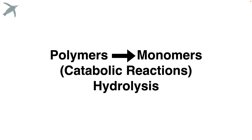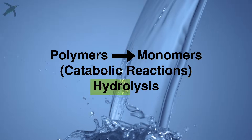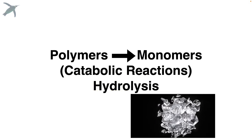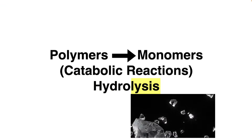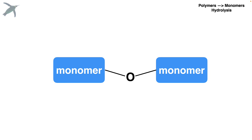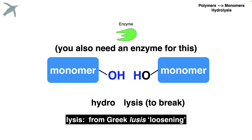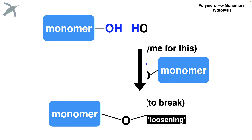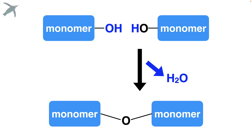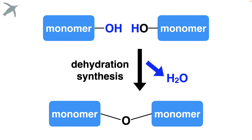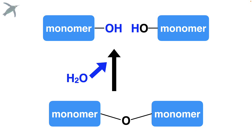Going the other way — polymers to monomers — that happens by hydrolysis. Again, watch the name. You see hydro, that means water, and lysis means to loosen, to break, or to burst. So we're going to add water, and then we're going to lyse the thing — it's going to break. For hydrolysis, you also need an enzyme. So it really is very simple: monomer to polymer, water comes out — dehydration synthesis. Polymer to monomer, add water and lyse — hydrolysis.